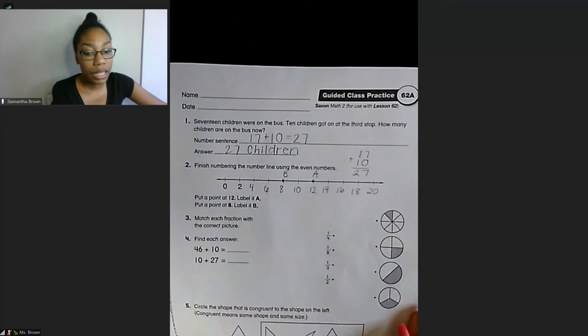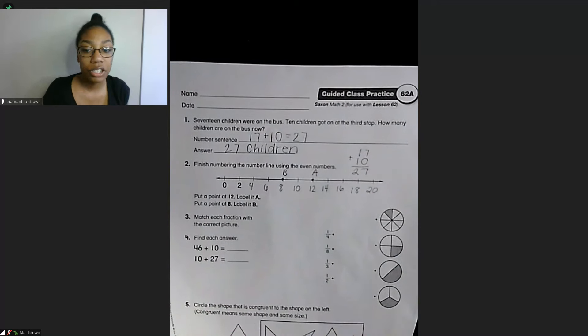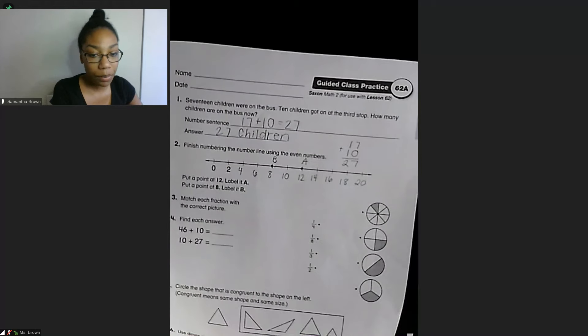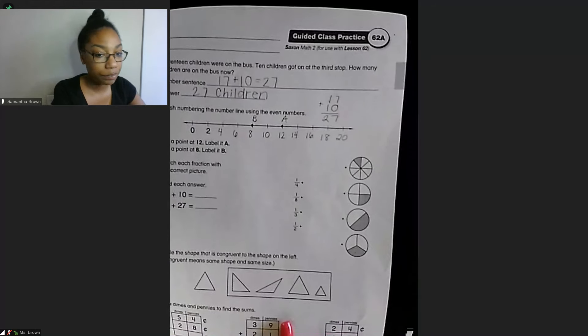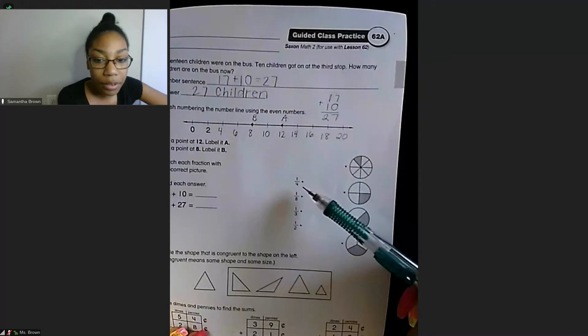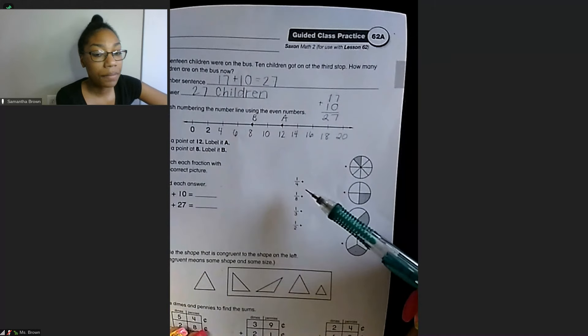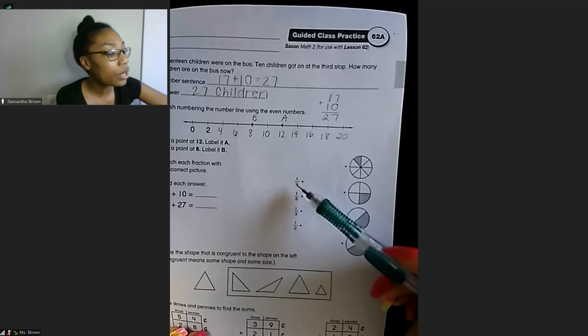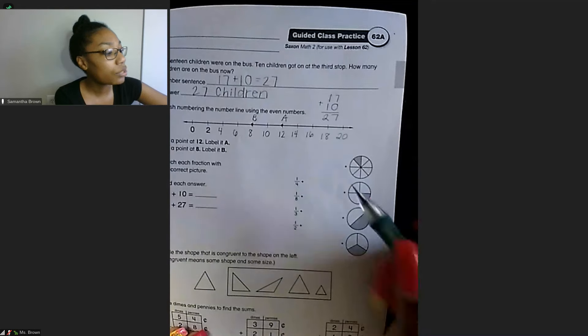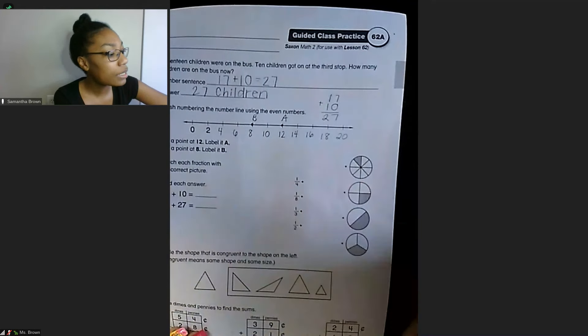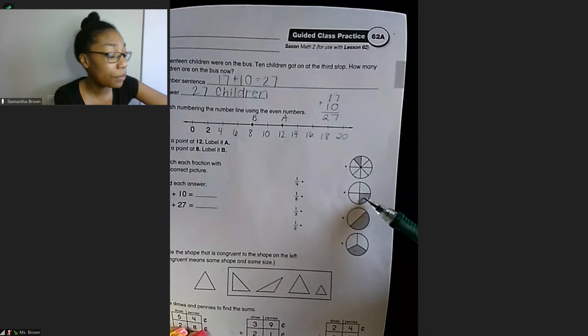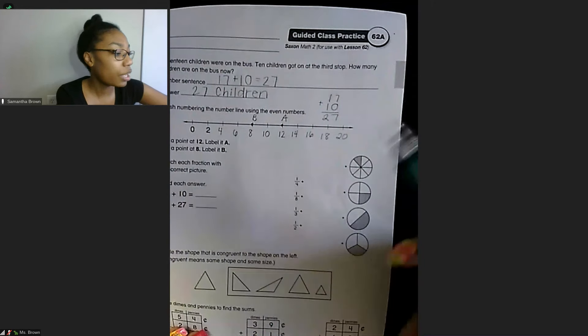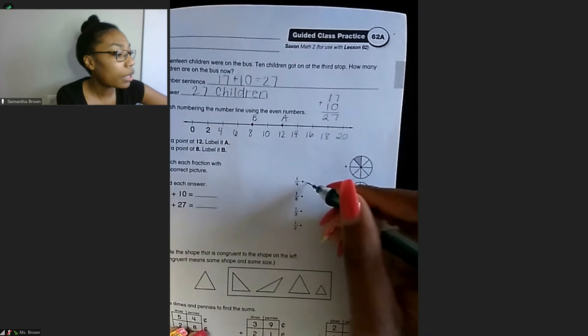Number 3 says match each fraction with the correct picture. So just move my paper over a little bit. We have 1/4. So we need to find the fraction that matches the number, the fraction number with the picture. So 1/4, I see that we have 1, 2, 3, 4 pieces here and one is shaded. So I'm going to draw my line there.